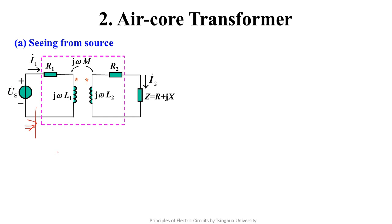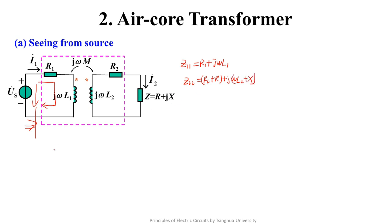Now let's write the equations and analyze the mutual inductance circuit using KVL. We define Z11 as the sum of all impedances on the primary side, and Z22 as the sum of all impedances on the secondary side, which includes the secondary coil and the load. Based on these definitions, we write the KVL equations for both the primary and secondary sides.